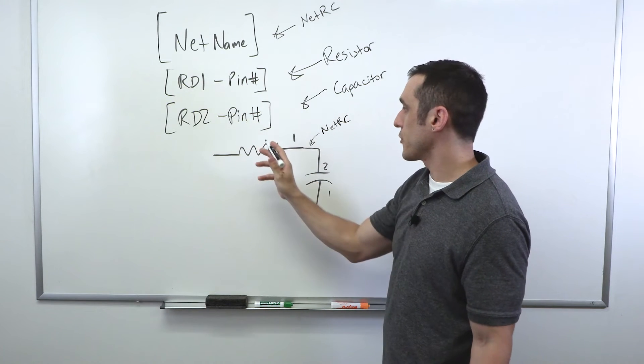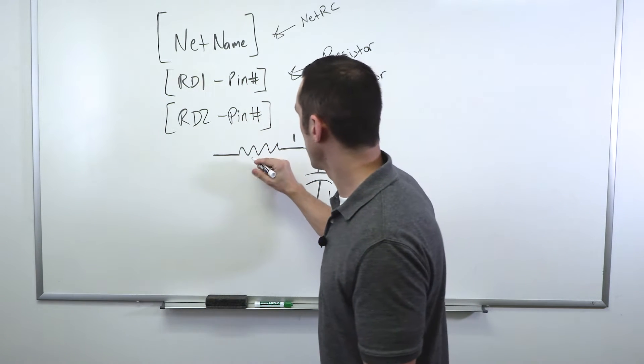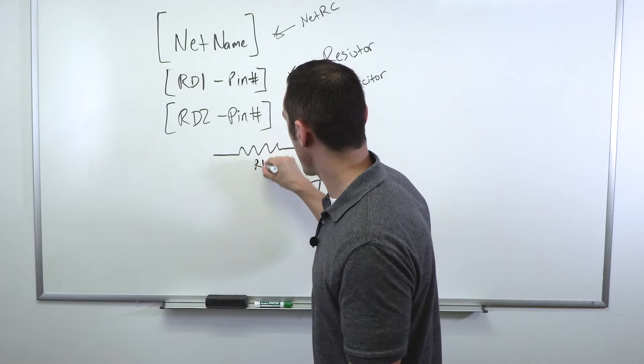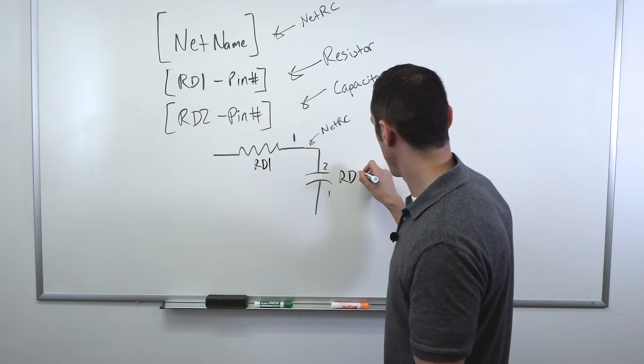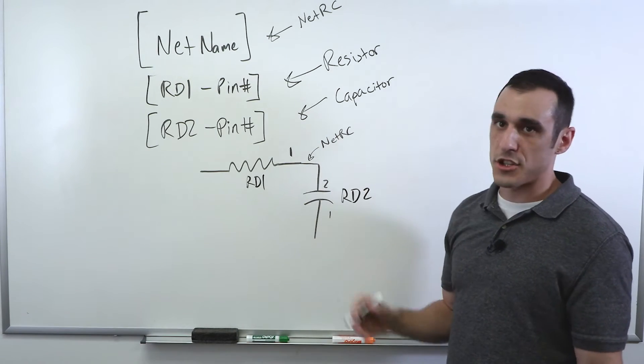And this entry here for RD1 is just my reference designator. And here, this would be RD2 for my capacitor. And so if I were to write this connection up in a netlist, it's pretty simple.